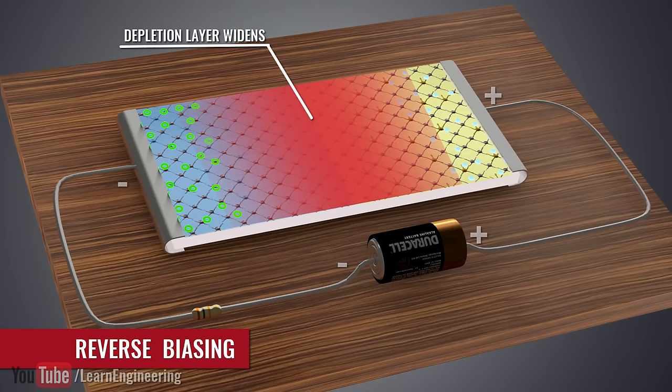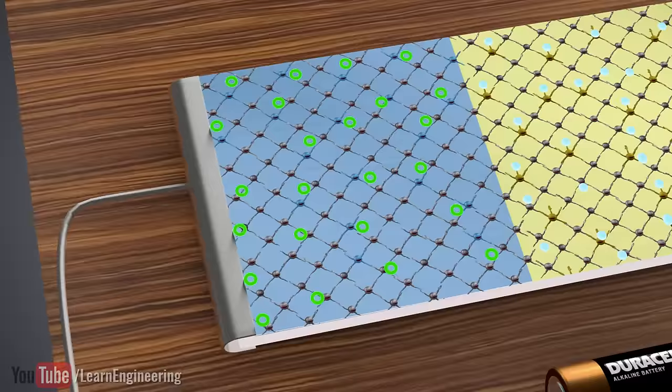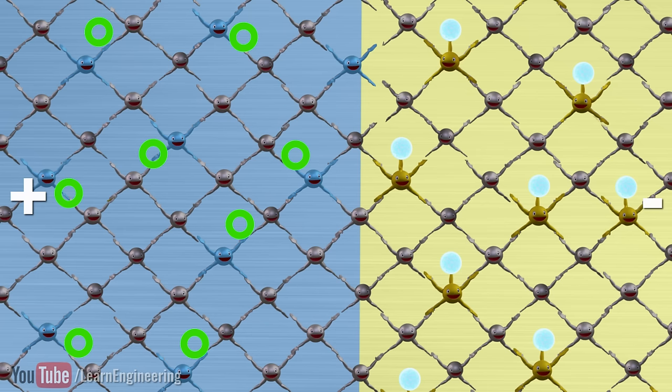However, if you reverse the power connection, the situation is quite different. Assume that the power source has enough voltage to overcome the potential barrier. You can immediately see that the electrons will be pushed away by the negative terminal. When the electrons cross the potential barrier, they will be drained of energy and will easily occupy the holes in the p-region.